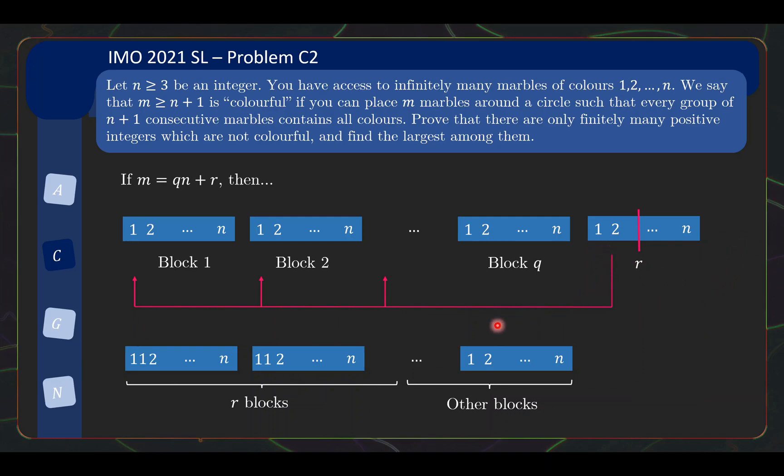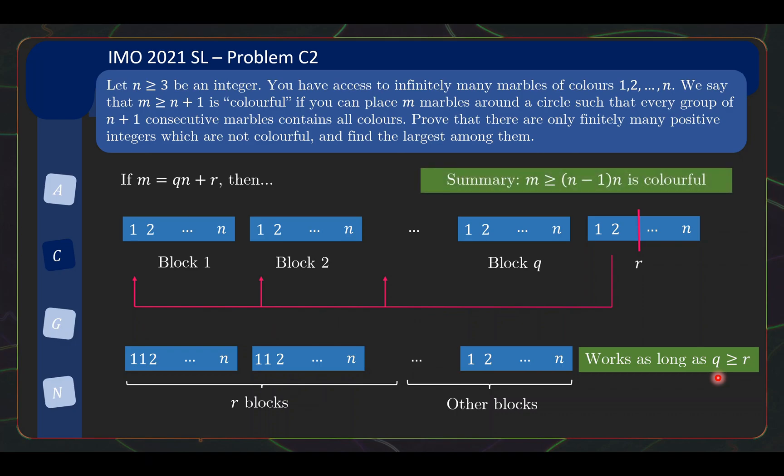Well, in order for this redistribution trick to work, right? You actually need one condition, which is that you need to have q being the number of blocks greater than or equal to r, which is the number of tokens to redistribute. So this construction will work as long as q is greater than or equal to r.